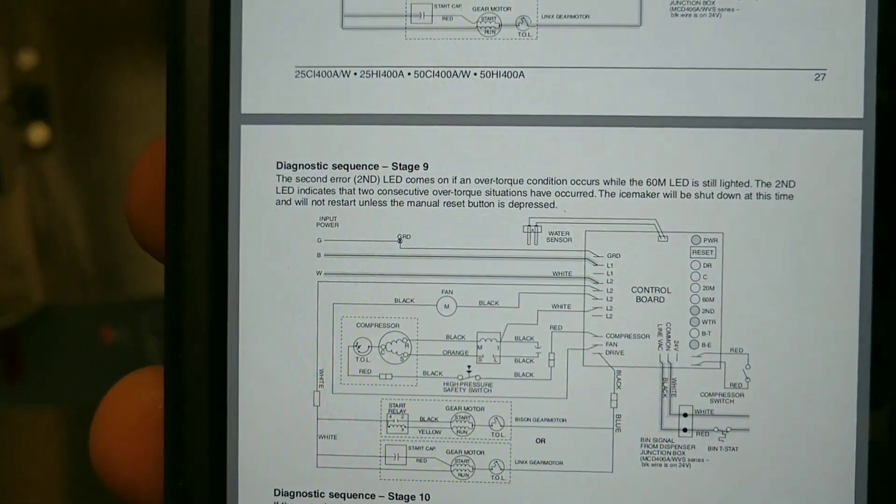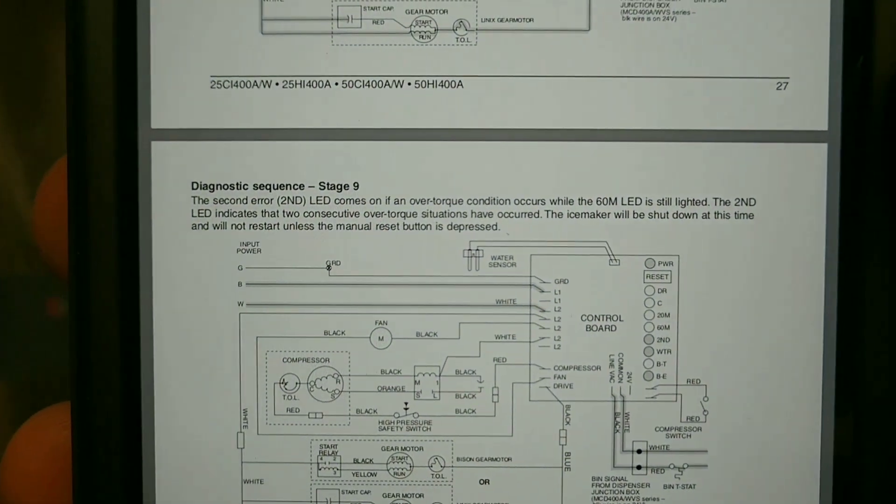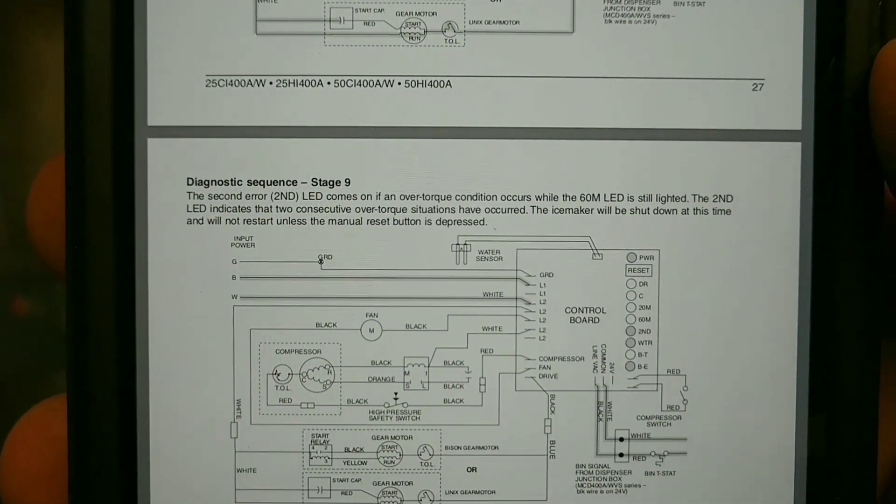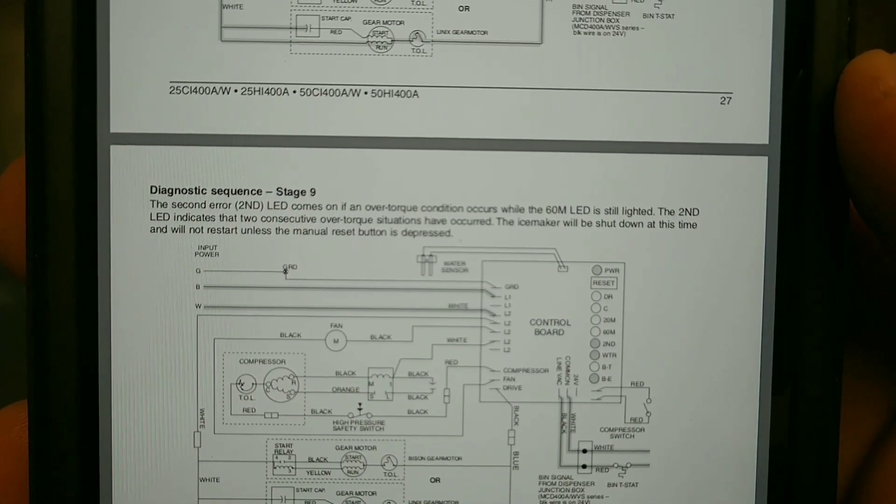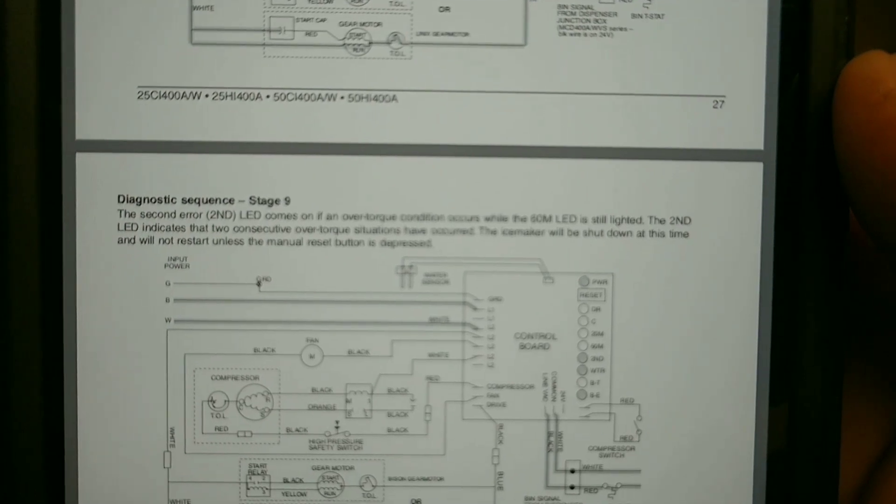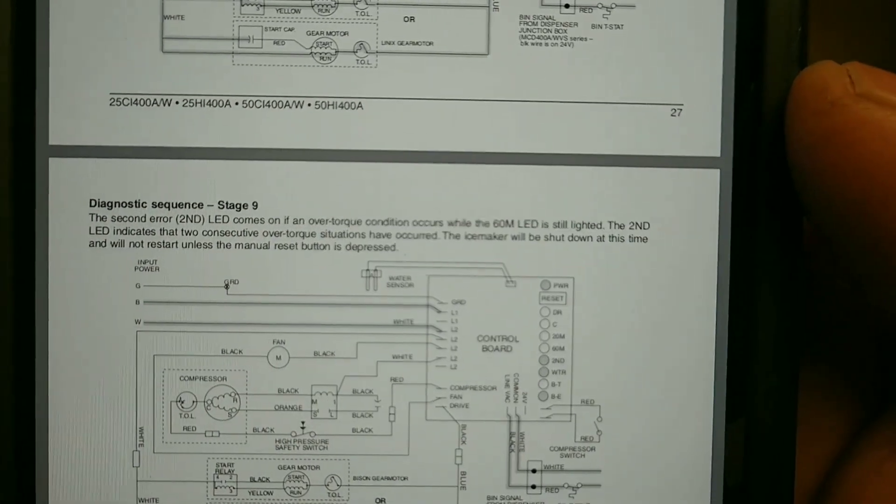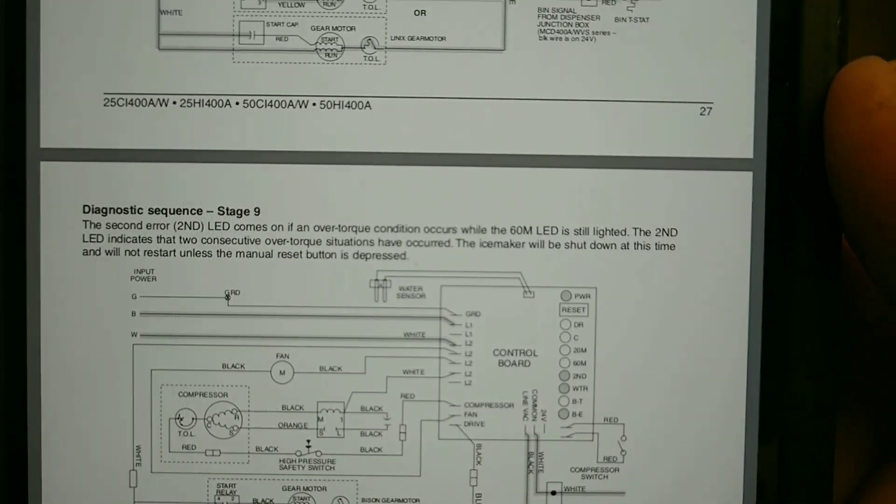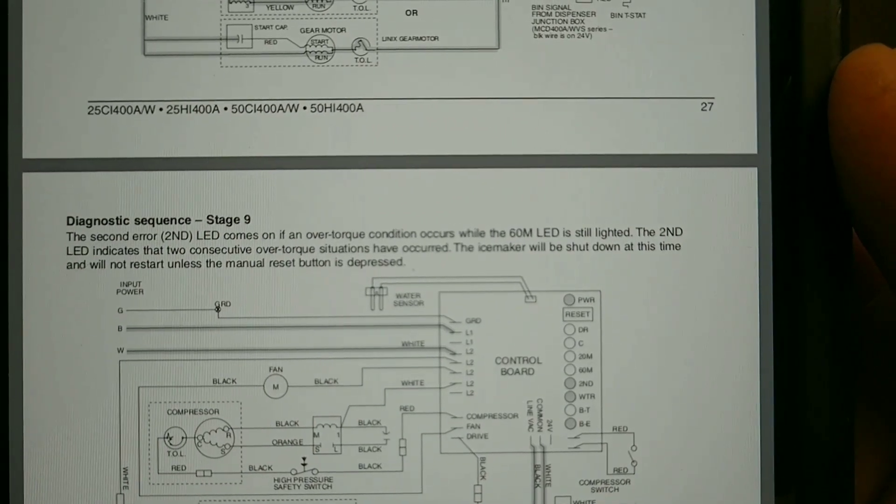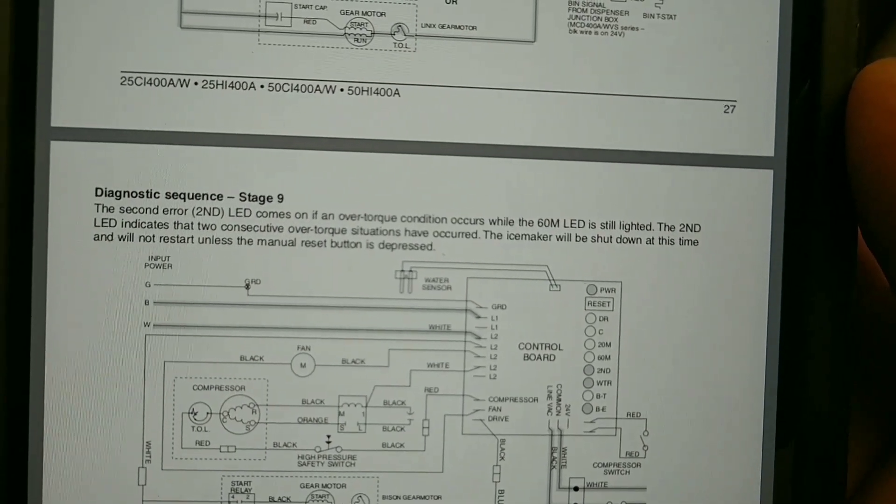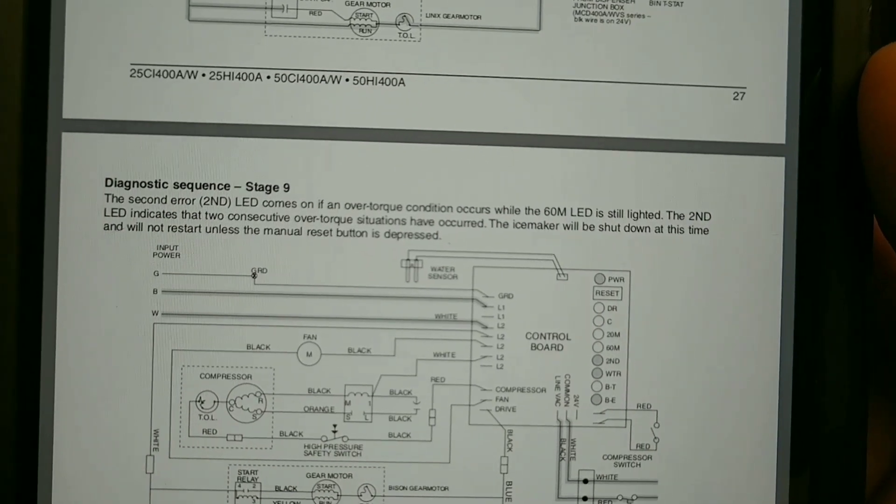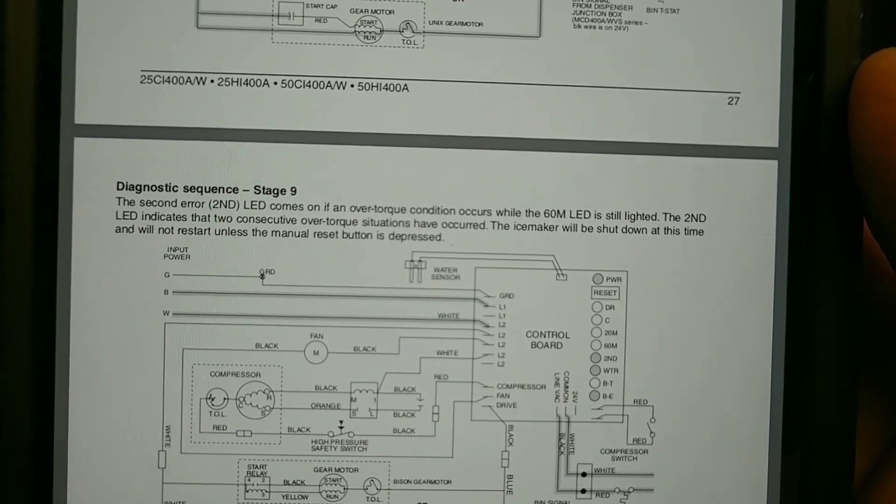But it didn't, because we also had our second LED. The second LED comes on if an over torque condition occurs while the 60m LED is still lit. The second LED indicates that two consecutive over torque situations have occurred. The ice maker will be shut down at this time and will not restart unless the manual reset button is depressed.